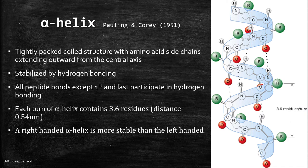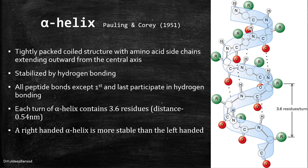Alpha helix is the most common spiral structure of protein, with a rigid arrangement of the polypeptide chain. The alpha helix structure was proposed by Pauling and Corey in 1951, regarded as one of the milestones in biochemistry research. The alpha helix is a tightly packed coil structure with amino acid side chains extending outward from the central axis. It is stabilized by extensive hydrogen bonding between the O of one peptide bond and the H of another. All peptide bonds except the first and last participate in hydrogen bonding. Each turn of alpha helix contains 3.6 amino acids and travels a distance of 0.54 nanometers. Alpha helix is a stable conformation formed spontaneously with the lowest energy.